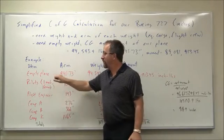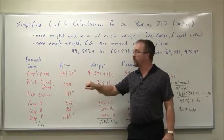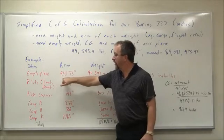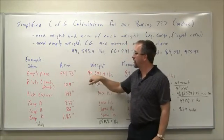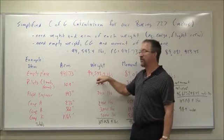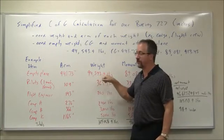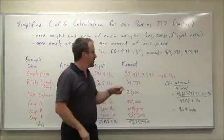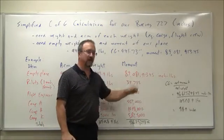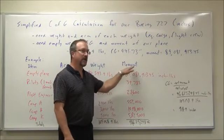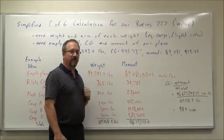First thing we have to consider is the empty plane and its weight. The arm, or the CG right now, is 941.73 inches, so that's the arm of its mass, 94,593.9 pounds. Multiply those two together, get 89,081,913.45 inch-pounds. So that's the moment of the weight of the empty aircraft.